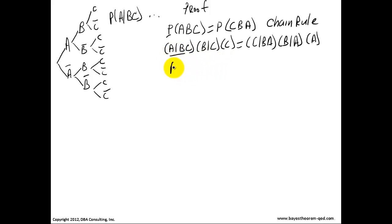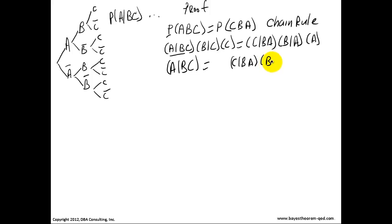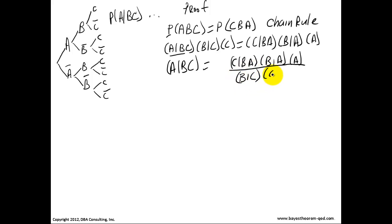So probability of A given B-C is equal to probability of C given B-A times probability of B given A times probability of A, all divided by probability of B given C times C.